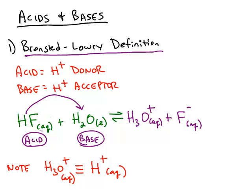And what's left behind on hydrofluoric acid is the fluoride anion. So we have an acid reacting with a base, and if you look at the product side of this reaction, to explain the reverse reaction, we can also show that hydronium, H3O+, is an acid, and fluoride is a base.